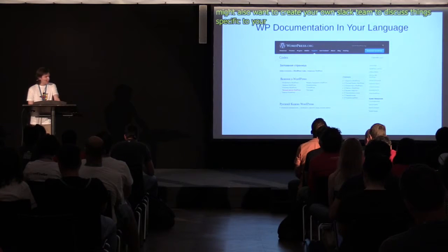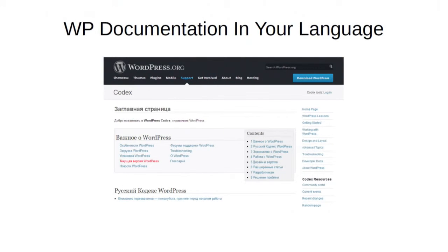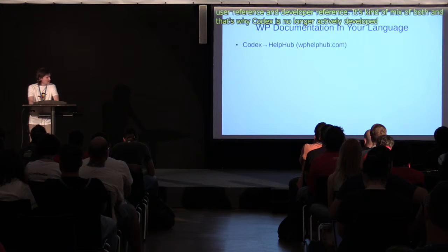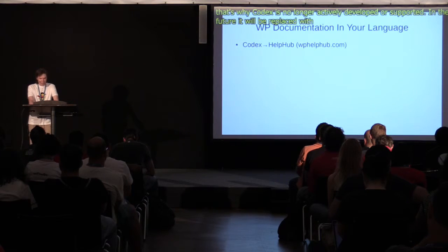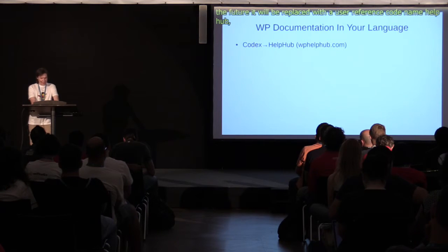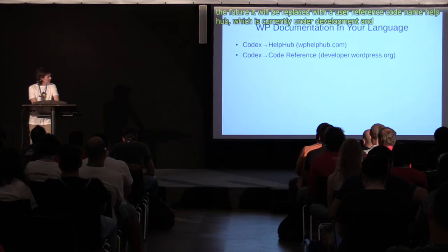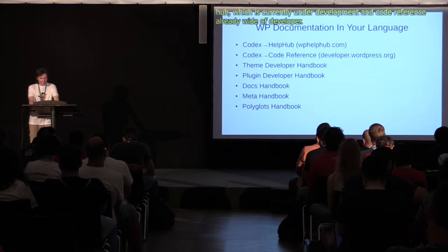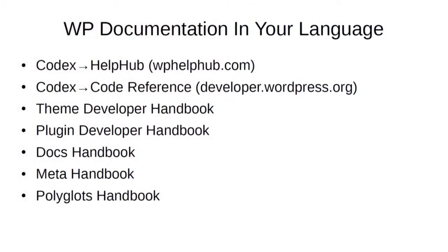When you think about WordPress documentation, the first thing that comes to mind is the Codex — a collection of wiki pages with functional references and examples. The upside is that anyone can edit, expand, or translate it. The downside is that it might be hard to find information because there's no clear distinction between user reference and developer reference. That's why Codex is no longer actively developed. In the future it will be replaced with a user reference codenamed HelpHub, currently under development, and a code reference which is already live on developer.wordpress.org. There are also handbooks for plugin and theme developers and for some contributor teams — at the moment all in English, but perhaps some will be translated in the future.